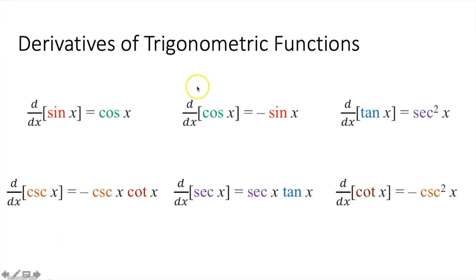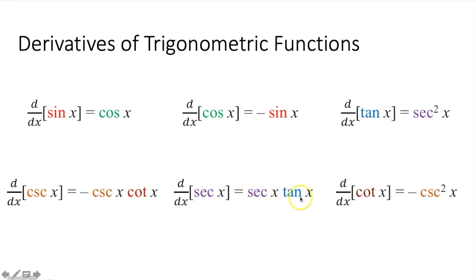Now let's get to the new stuff: the derivatives of trigonometric functions. The first two you already know — the derivative of sine of x is cosine of x, and the derivative of cosine of x is negative sine of x. The new ones: the derivative of tangent of x is secant squared x; the derivative of cosecant x is negative cosecant x cotangent x; the derivative of secant x is secant x tangent x; and the derivative of cotangent x is negative cosecant squared x. You've already memorized two of them, so you only need four more. All of these must be memorized for the AP test.